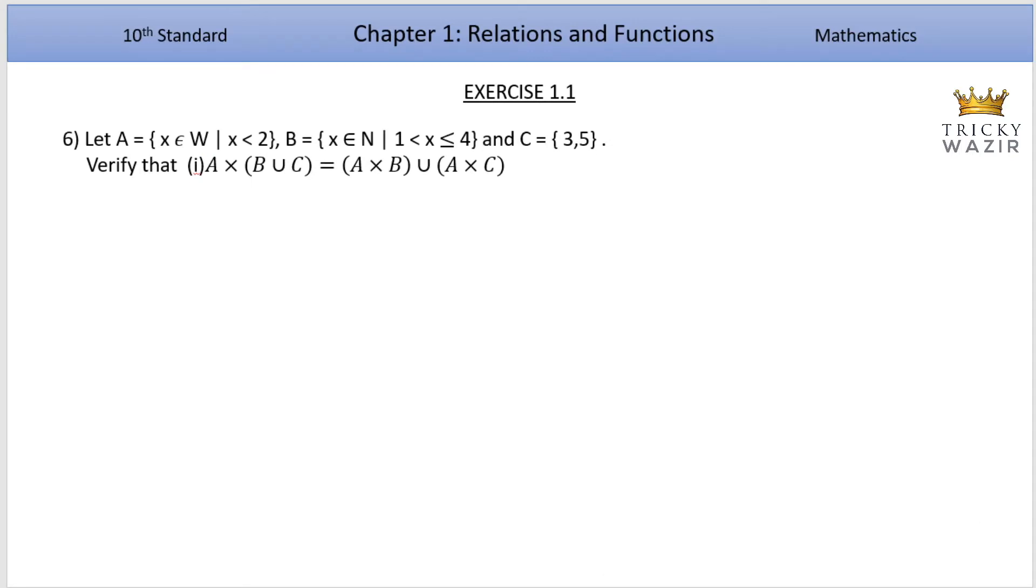Hello guys, welcome to Tricky Wizard. Exercise 1.1, sixth problem. Let A equal to x belongs to W such that x less than 2, B equal to x belongs to N such that 1 less than x less than or equal to 4, and C equal to 3 comma 5. Verify that A cross B union C equal to A cross B union A cross C.